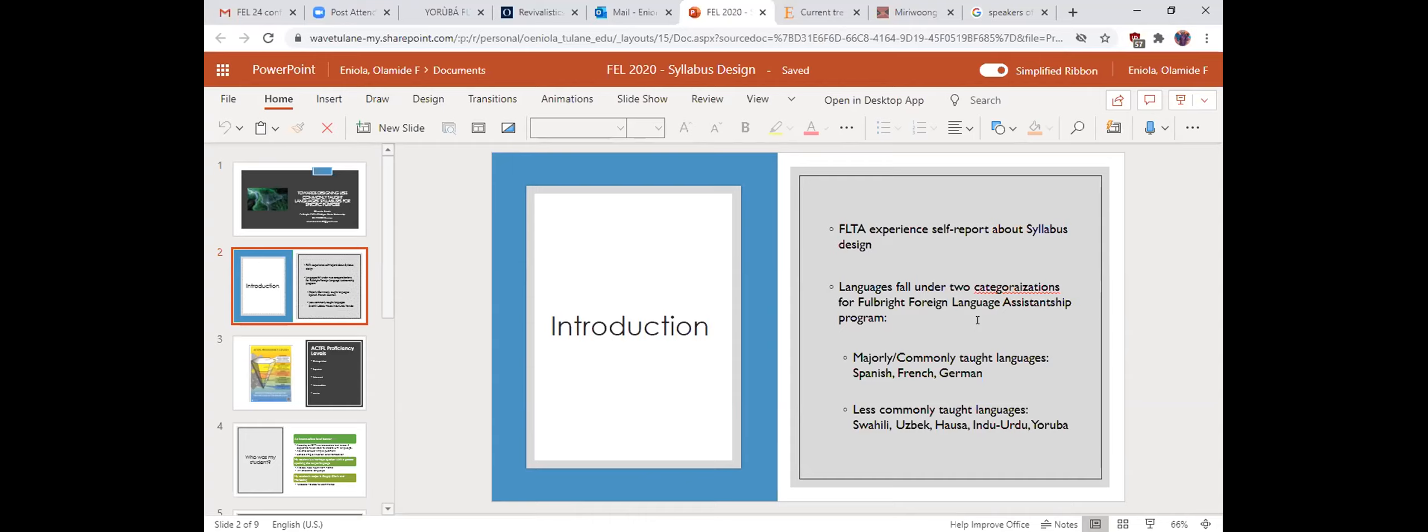So Yoruba language, though I would not say is endangered, but in the context of the United States, is a less commonly taught language. Maybe by just given the course of Yoruba language in Nigeria, the native speakers, including the L2 speakers, they are estimated at over 42 million. And in the U.S., the number of speakers are estimated at 195,000. So pretty much, Yoruba is a bit stable.